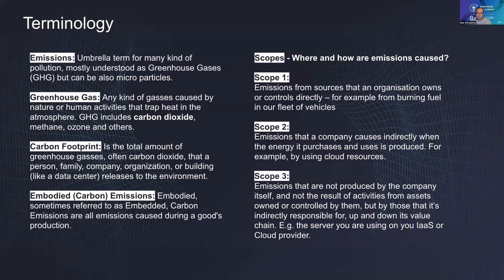Scope 3 is everything in your production line that you don't have direct influence over. If you order a server rack full of servers, all the individual components required energy, they were delivered from other manufacturers who produced them, they were transported, people had to travel to work, and so on. All of these emissions need to be calculated together as scope 3 emissions — embodied into the server or server rack in your data center. As you can see, this can be a real rabbit hole.